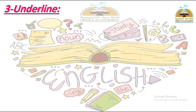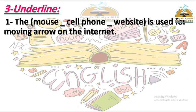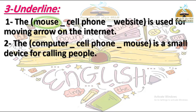تمرين underline - ضع خط تحت الإجابة الصحيحة. Number one: The mouse / cell phone / website is used for moving the arrow on the screen. الماوس بنستخدمها علشان نحرك السهم، والسيل فون ده الموبايل، والويب سايت الموقع الإلكتروني. الإجابة: mouse.